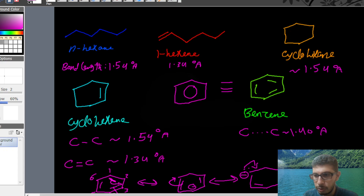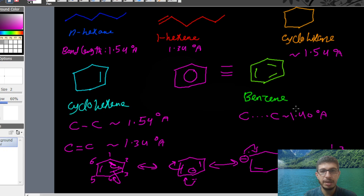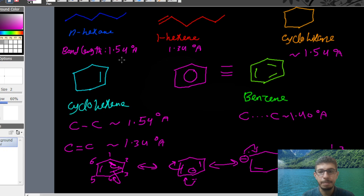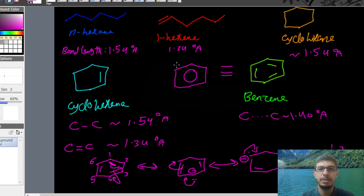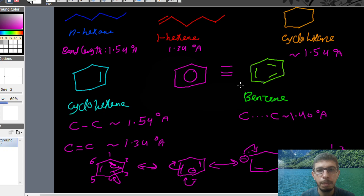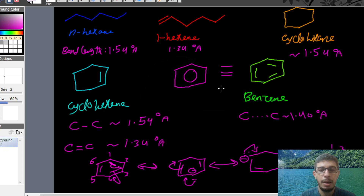This unusual resonance that takes place in benzene leads to different properties. The chemical properties of benzene — both substitution reactions and addition reactions — are different from alkanes and alkenes. Benzene is not an alkane or alkene; that's why it is classified under a new group called aromatic compounds. I will discuss the addition reactions and substitution reactions next time.